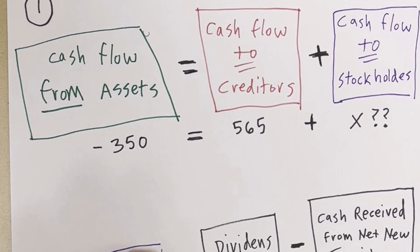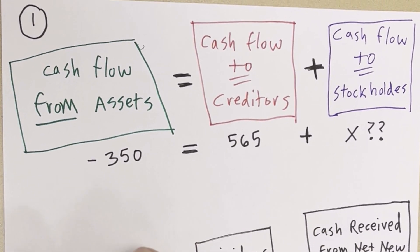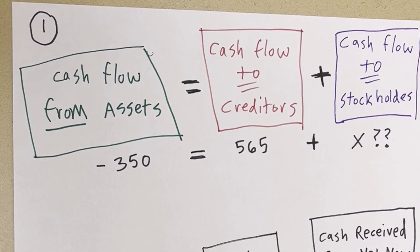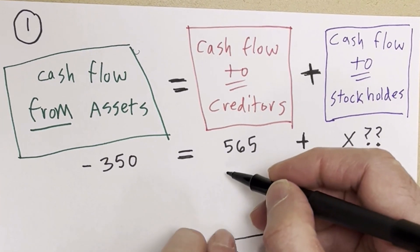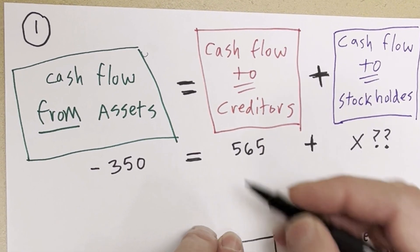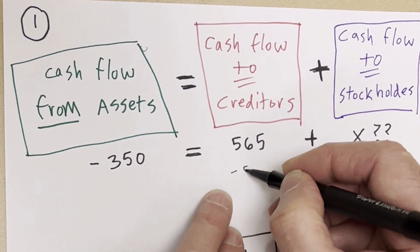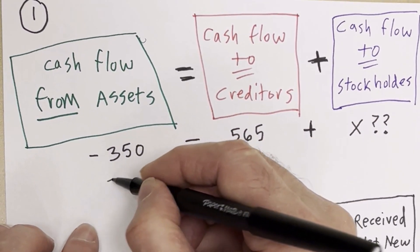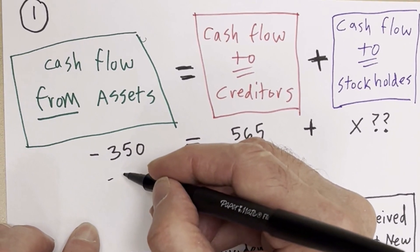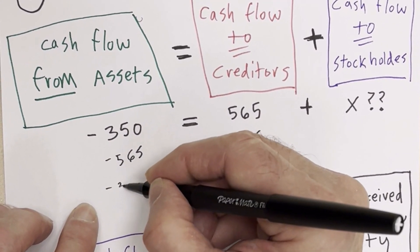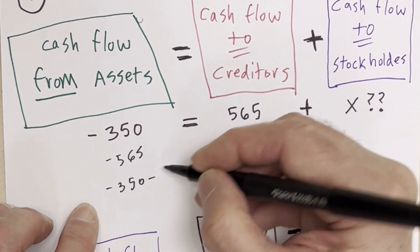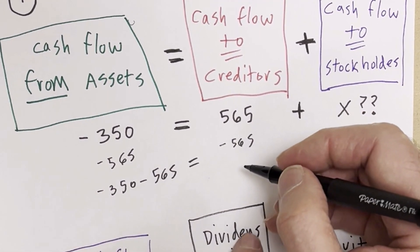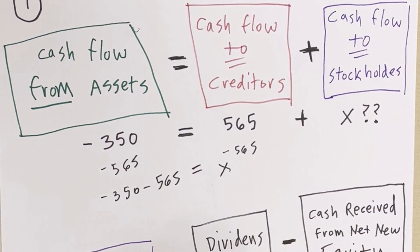Remember, that's an equation. You can do anything you want to an equation as long as you do it to both sides. So I need to isolate this x, so I'm going to go minus 565. Well, since I did it to this side, I got to do it over here also. That gives us minus 350 minus 565, and there's that equals sign, and we're left with x.